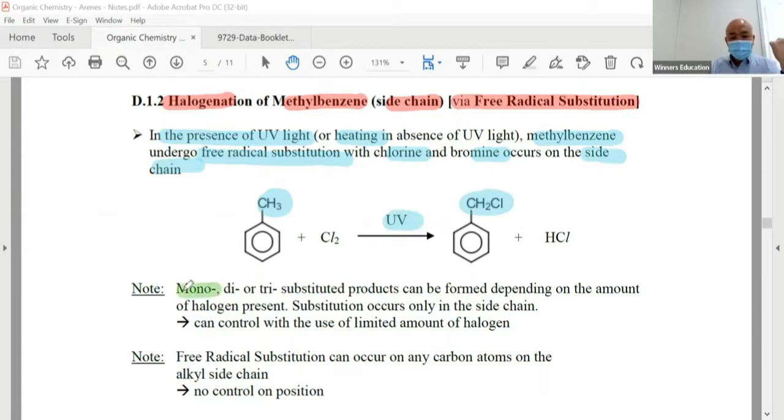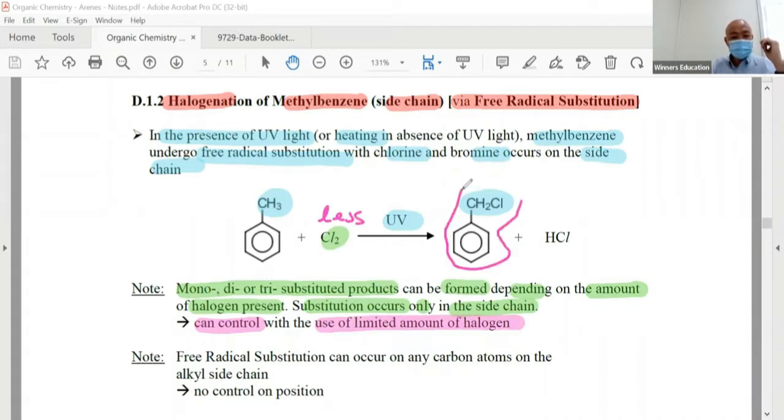Let's recap - alkanes mono, di, or tri substituted products can form depending on the amount of halogen present. Substitution only occurs in the side chain. We learned in alkanes we can still control as a chemist with the use of limited amount of halogen. If we use less, then I will get the mono-substituted product.